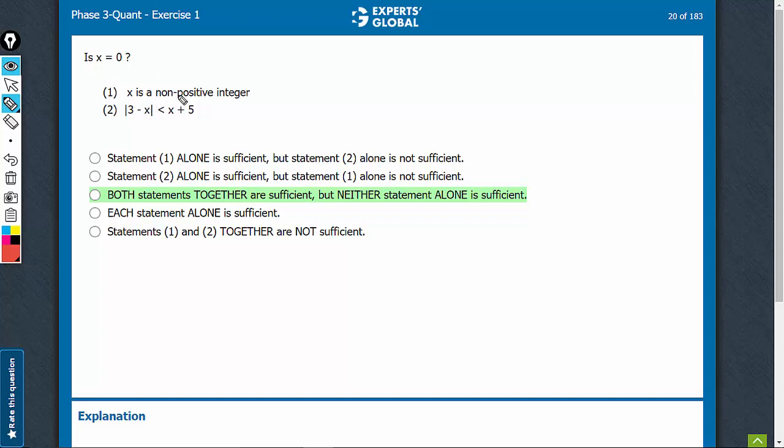Is x equal to 0? x is a non-positive integer, so x can be 0 also, and x can be one of the negative integers also.